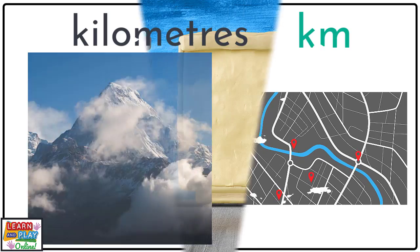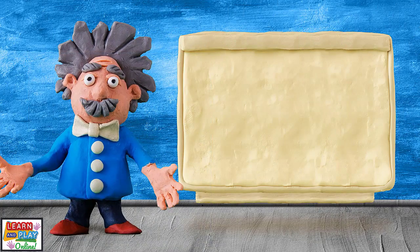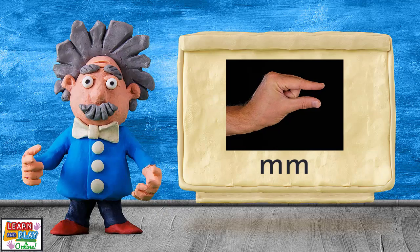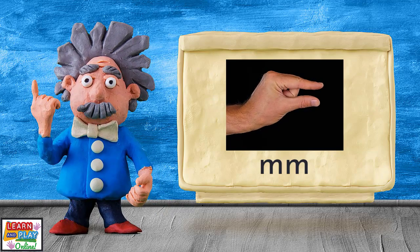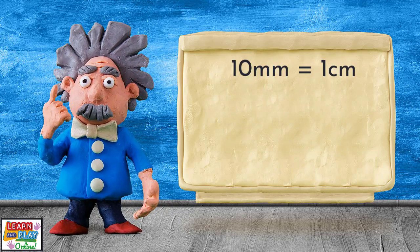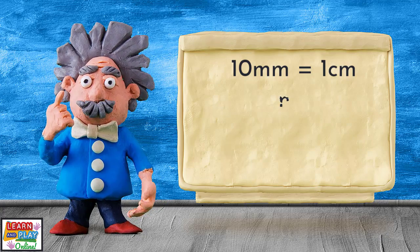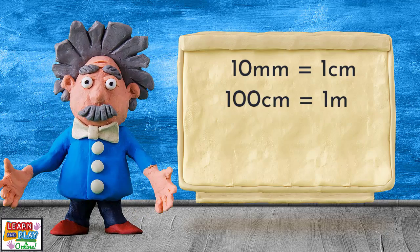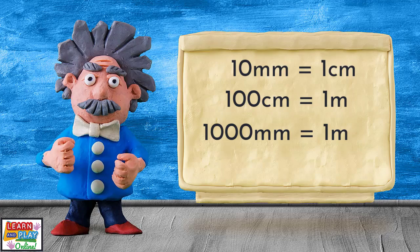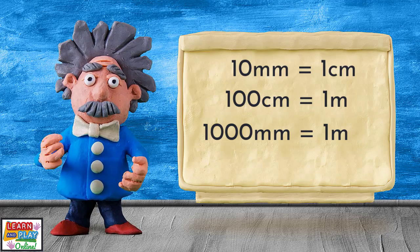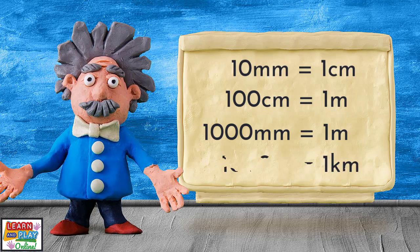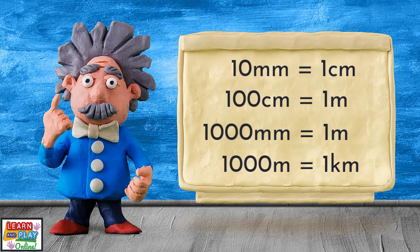Let's recap the facts we learned today. Millimeters are the smallest unit of measurement in the metric system. There are 10 millimeters in one centimeter, 100 centimeters in one meter — or 1,000 millimeters in a meter — and there are 1,000 meters in a kilometer.